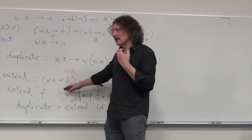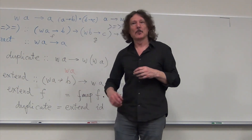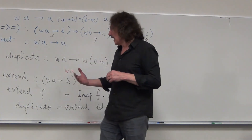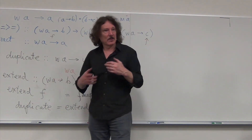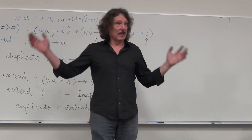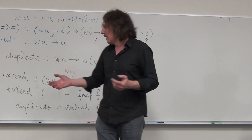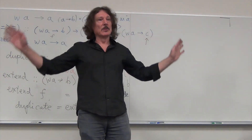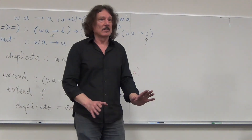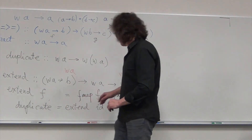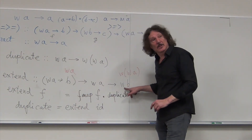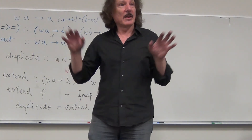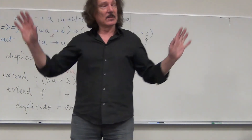So Extend takes this Kleisli arrow, which is sort of a personal thing — I am one person extracting value from my neighborhood — and it says: I am going to apply it to all possible neighborhoods. And I will create a new universe in which everything was modified by every person in this universe.